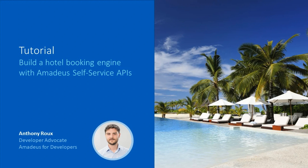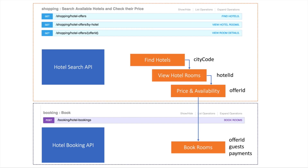Hey, my name is Anthony. I work as a developer advocate on Amadeus for Developers, and in today's video I would like to show you how to combine our hotel APIs to build your hotel booking engine. To build your own booking engine you need to combine four different inputs, and the first step obviously is to start with the hotel search API, which is composed of three different endpoints. We'll go through each of them to show you the complete flow until the end of the booking when you combine it with the hotel booking API.